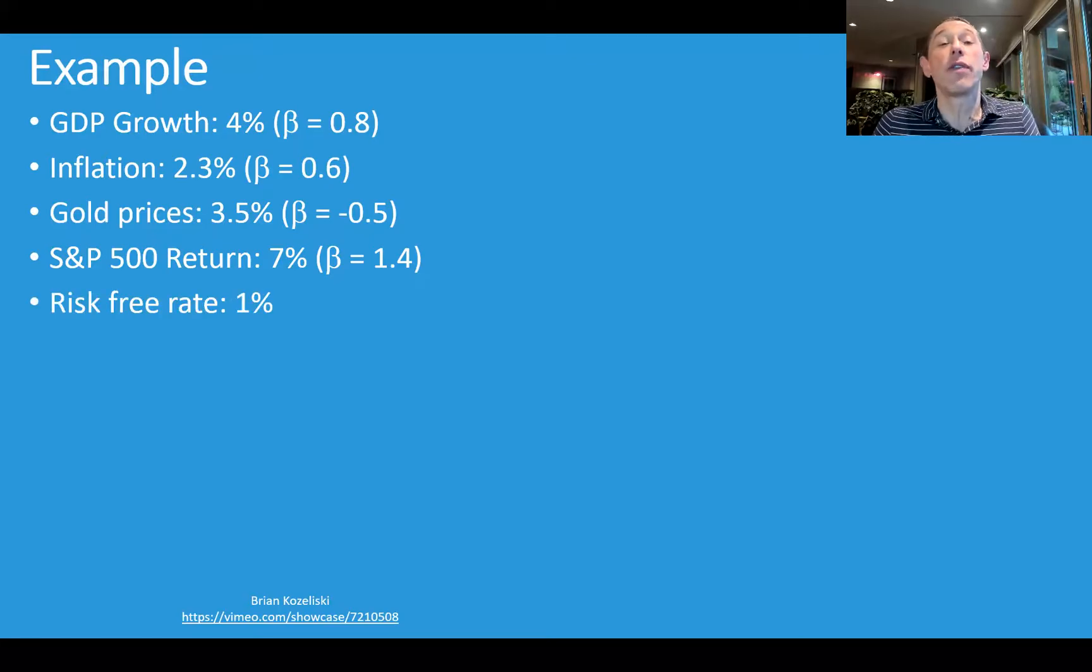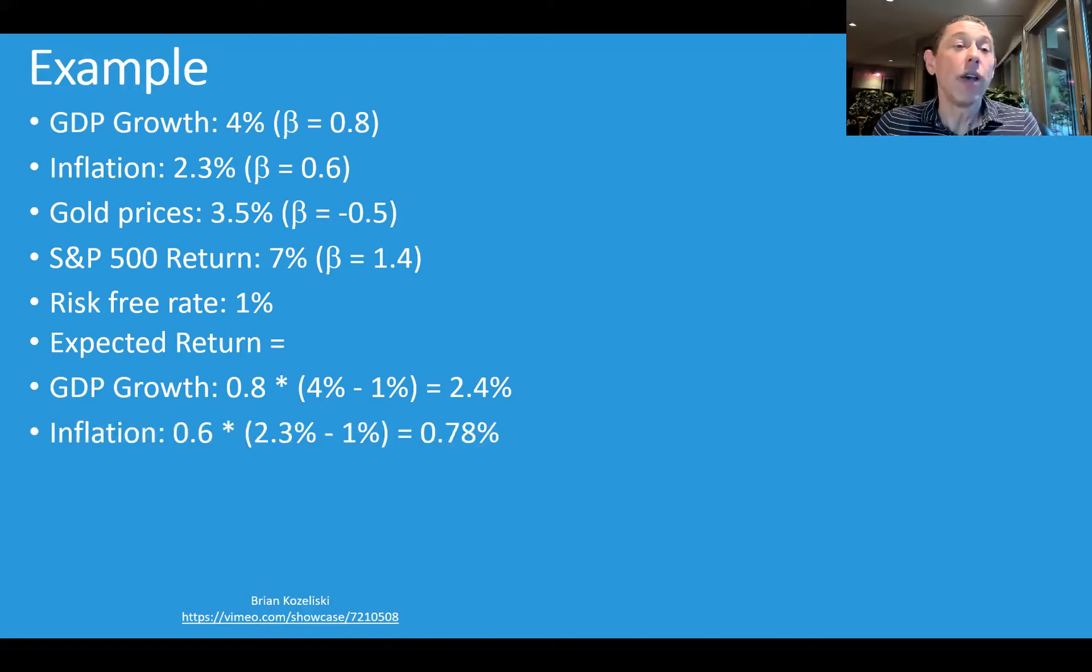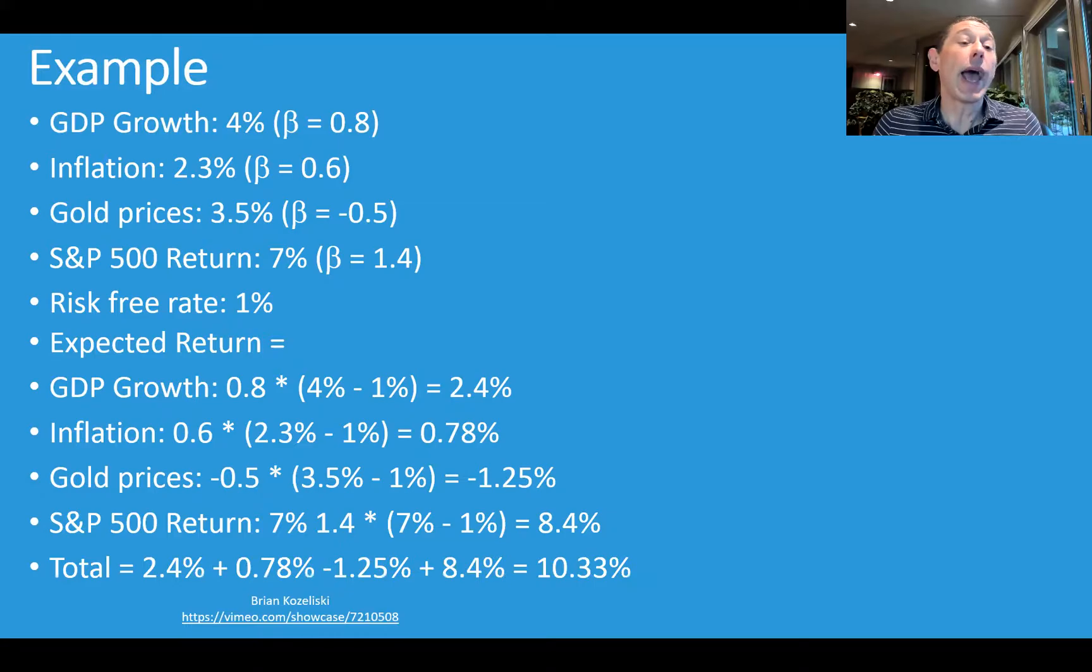And of course, there's also that risk-free rate. So to calculate this, we're going to take that beta of the GDP growth. We're going to take that risk premium, so our expected return for GDP growth minus the risk-free rate. We're going to get 2.4%. We do the same kind of thing for inflation, same kind of thing for gold prices, same kind of thing for this S&P 500 return. Then we add those things up together, and based on this model, we expect our asset to return 10.33%. That's basically it.